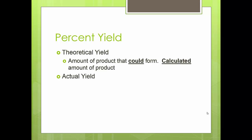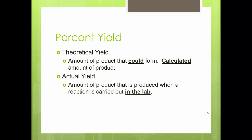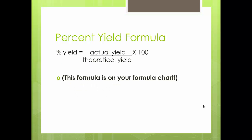The new vocab is actual yield — that is how much did you actually make, how much was produced in the lab. Then you have to do a comparison: theoretical is what it should have been, actual is what you got. Your percent yield formula is just actual over theoretical, and that's on your chart.